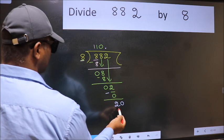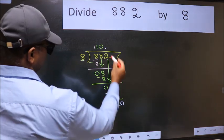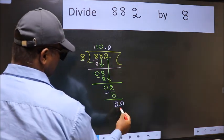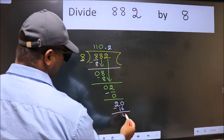So, 20. A number close to 20 in 8 table is 8 to 16. Now we subtract. We get 4.